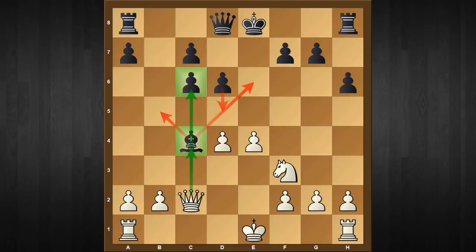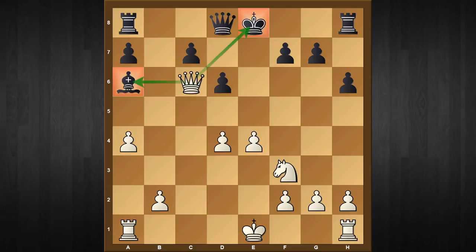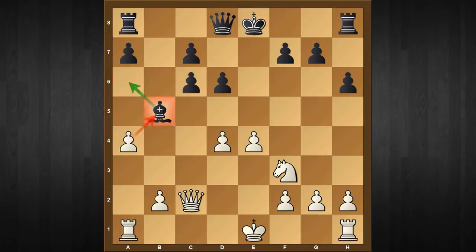There are three choices black can make here. If bishop to b5, which is a blunder, the simple refutation is after the move a4, that bishop doesn't have any square to go to. After bishop to a6 and queen captures c6, white clearly wins a piece, so that's not a good choice for black.